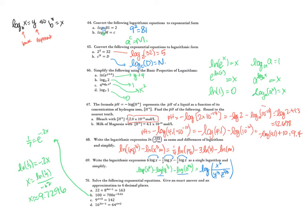For part C, take the natural log of both sides. We get (x + 5) times ln(9) equals ln(142). Divide by ln(9): x + 5 equals ln(142) divided by ln(9). Subtract 5 from both sides to get x. The approximation gives x approximately equal to negative 2.745.